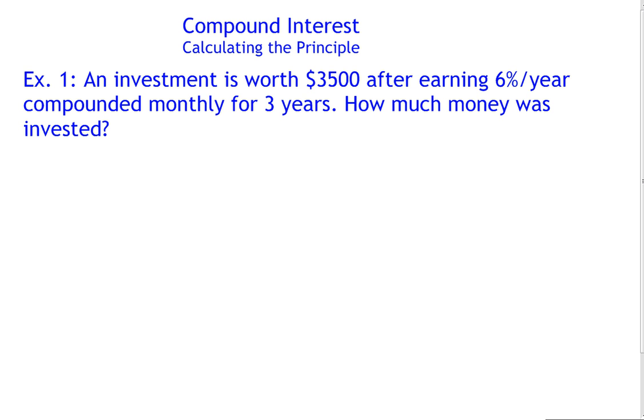So here's an example. An investment is worth $3,500 after earning 6% per year compounded monthly for 3 years. The question is how much money was invested to begin with.